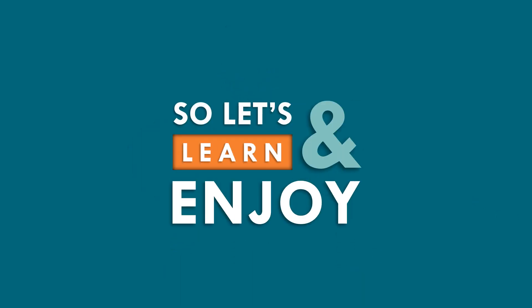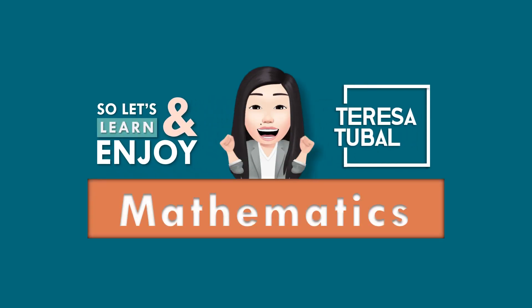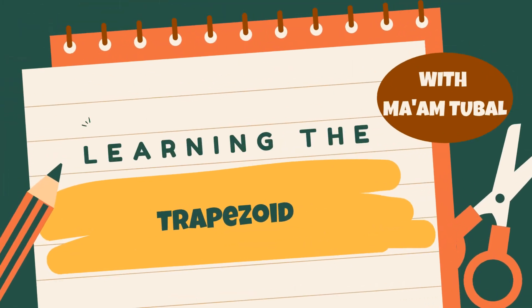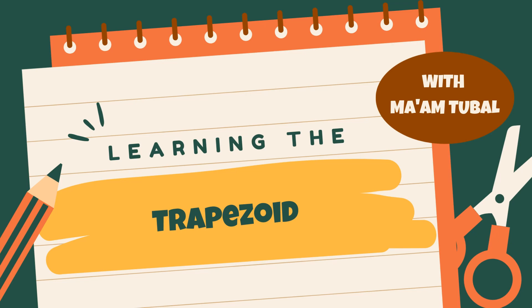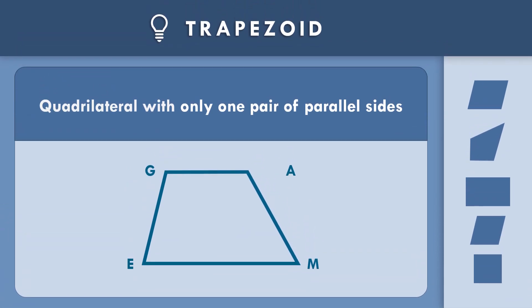Let's learn and enjoy Mathematics! Our lesson is about trapezoid. What is a trapezoid? A trapezoid is a quadrilateral with only one pair of parallel sides. The parallel sides are line segment GA, which is parallel to line segment EM.